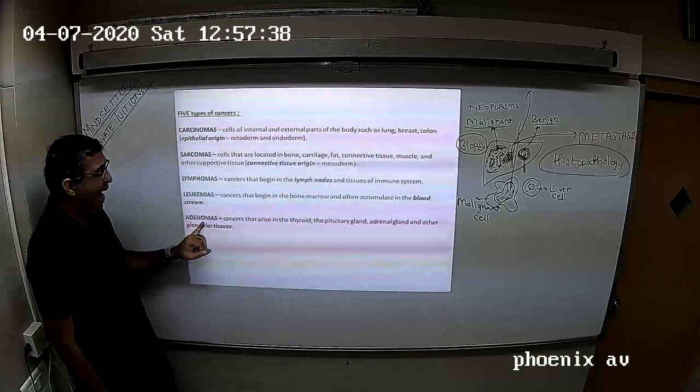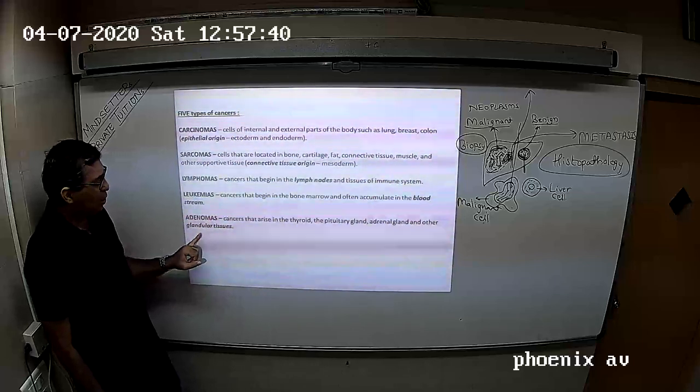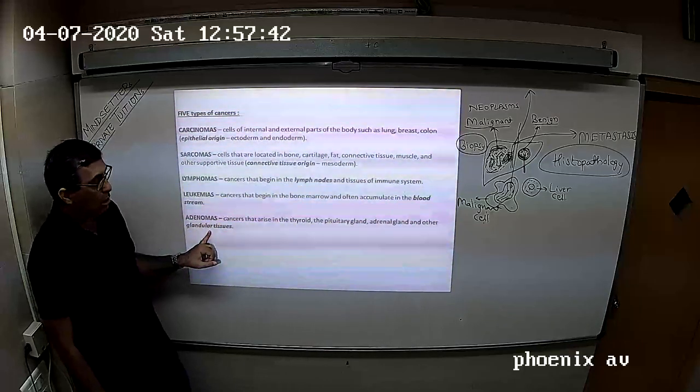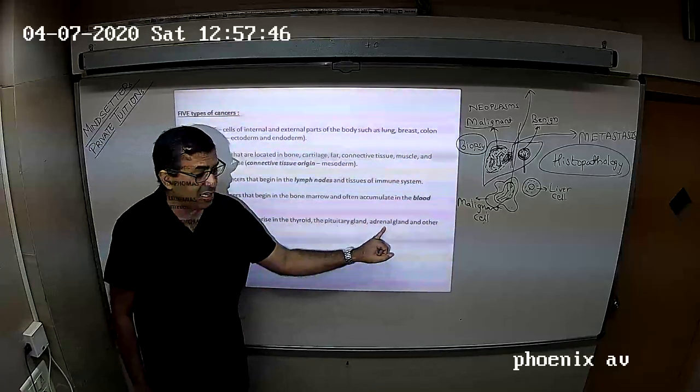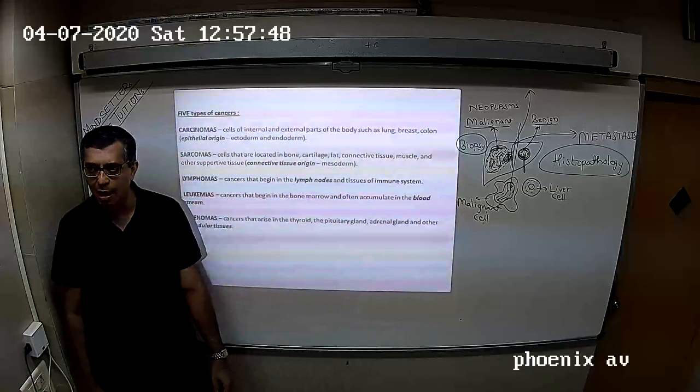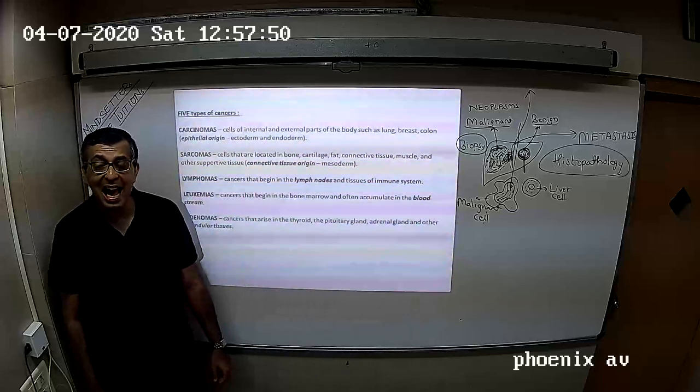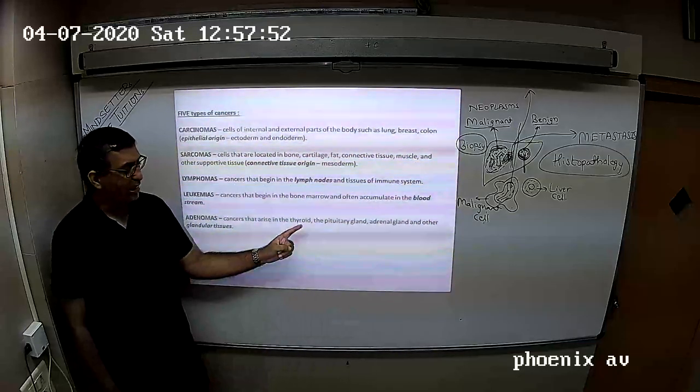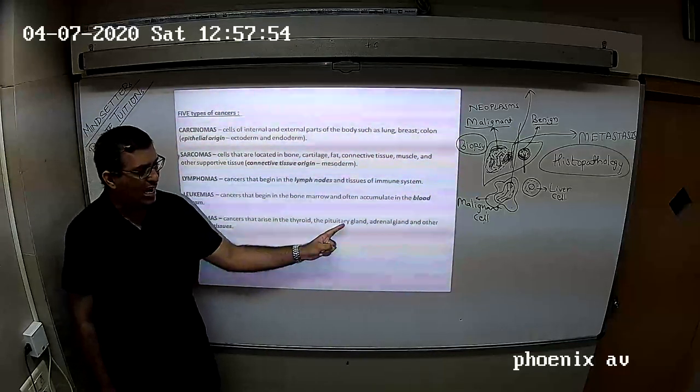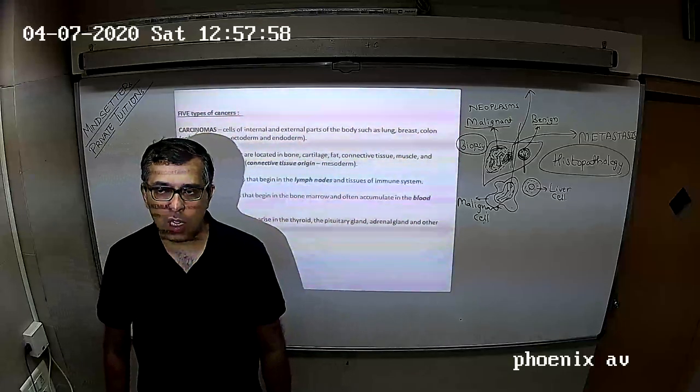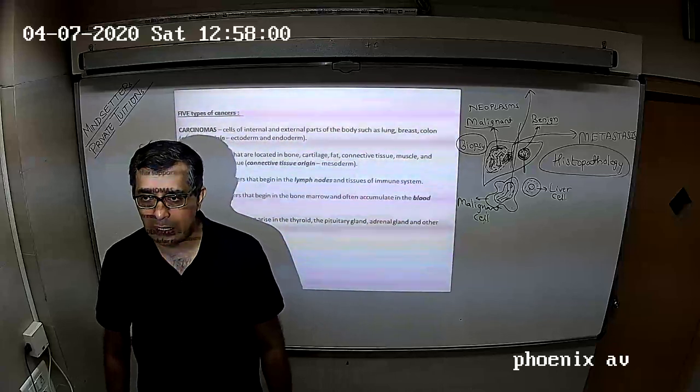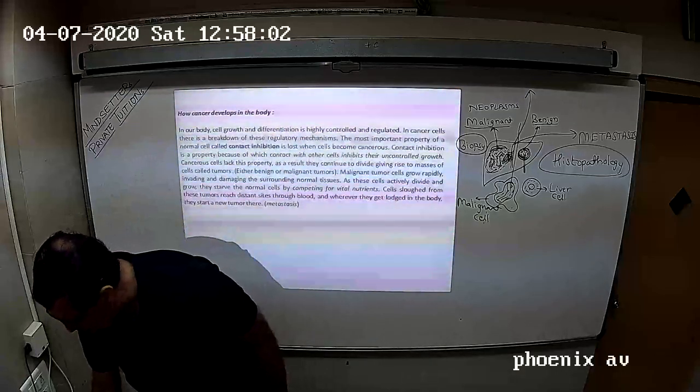And you have adenomas, cancers of glands. So suppose you have thyroid gland cancer, pituitary gland cancer, adrenal gland cancer, they are called as adenomas. You have thyroid adenomas, pituitary adenomas, adrenal adenomas. Glandular tissue cancers are called as adenomas.